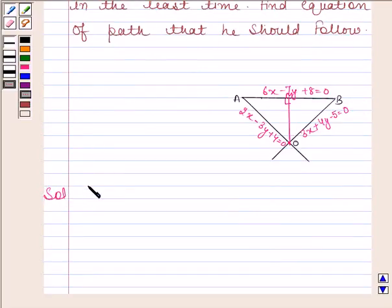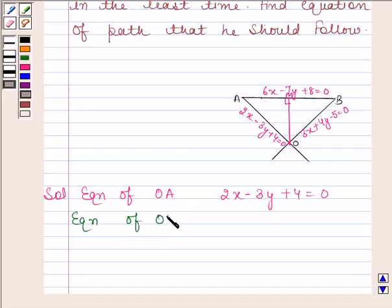Equation of OA is 2x minus 3y plus 4 equals 0 and equation of OB is 3x plus 4y minus 5 equals 0. By solving these two equations, we can get the coordinates of point O since O is the point of intersection of path OA and OB. So let's now solve these two equations.